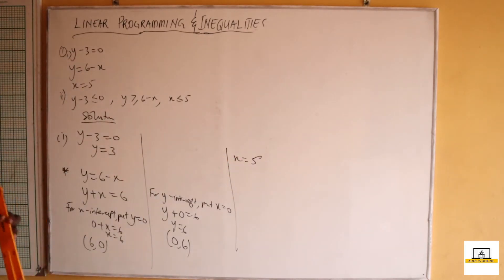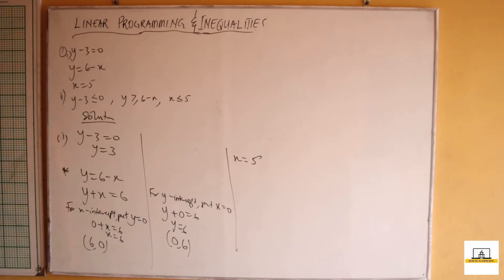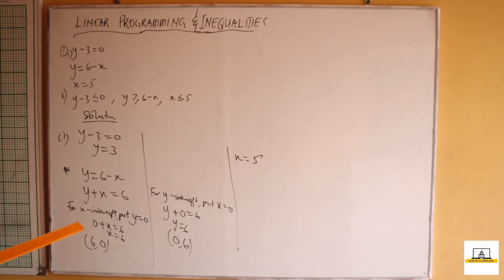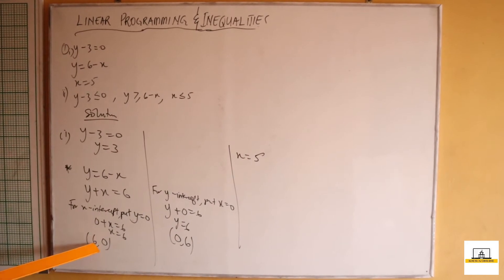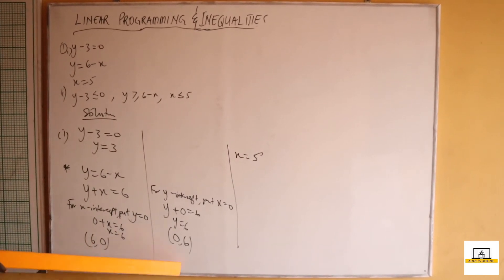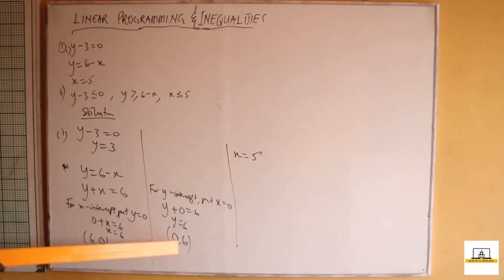Now let's draw these lines on our coordinate plane using 2 centimeters to 1 unit on both axes. The highest value of x is 6 and the highest value of y is also 6. We also have values 3 and 5 to consider.